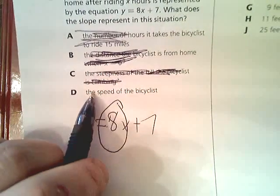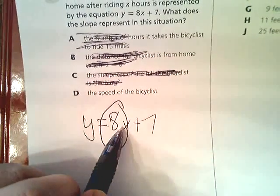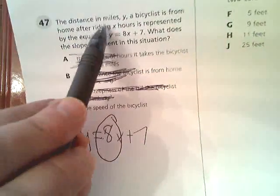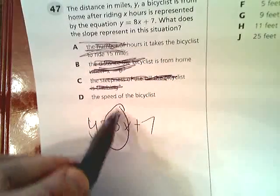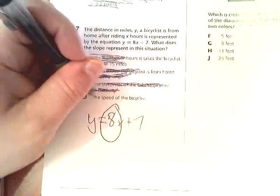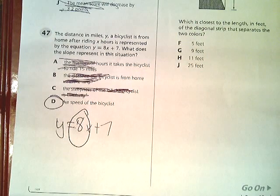This is the speed. That's pretty likely. Now, this is how many miles, this is the number of hours, and the distance in miles is y. So this is what's changing it. The only thing that 8 could represent is the speed, and speed is a representation of change. So we know the answer to number 47 is D.